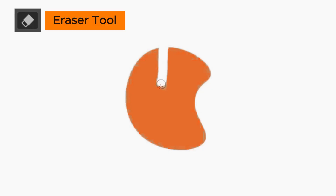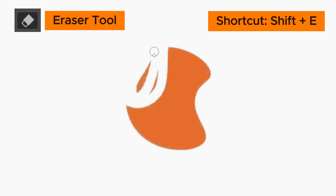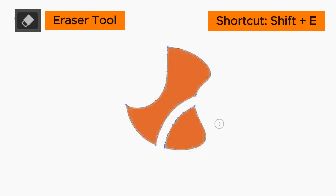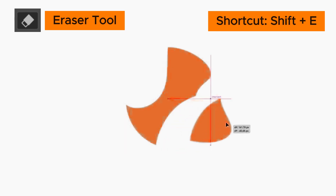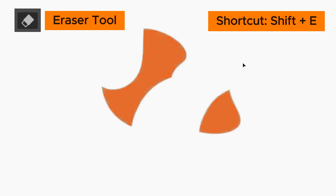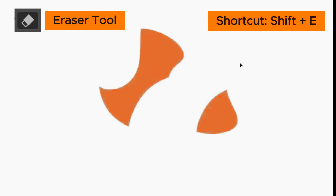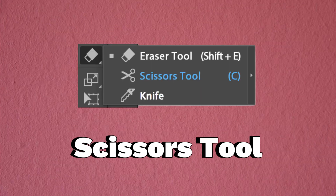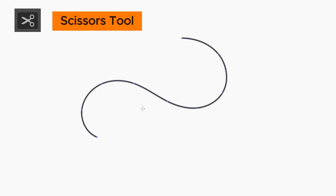The eraser tool shortcut is Shift+E. Click and drag on top of a selected object to erase parts of it. Press the square bracket keys to change the eraser size. The scissors tool shortcut is the letter C. Click on a path to split it at that specific point.